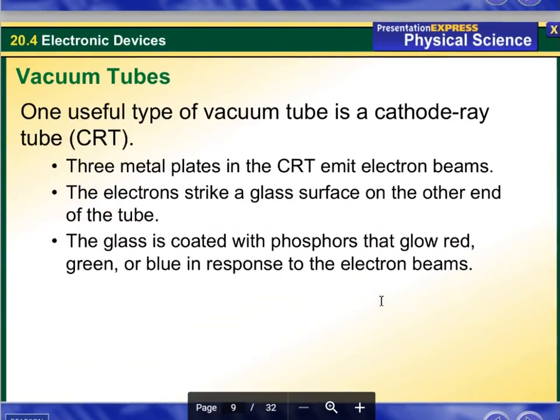One useful type of vacuum tube is a cathode ray tube or CRT. Three metal plates in the CRT emit electron beams. The electrons strike a glass surface on the other end of the tube. The glass is coated with phosphors that glow red, green, or blue in response to the electron beams.